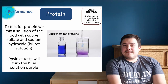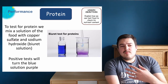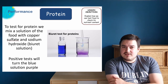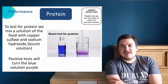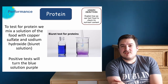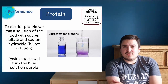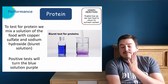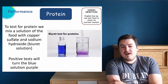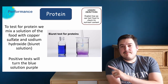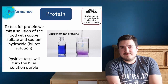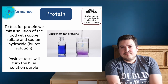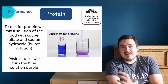If we're testing food for proteins, we use Biuret solution, which contains copper sulfate and sodium hydroxide. We mix this with the food dissolved in water, and the Biuret solution will change from a blue color to a purple color, as you can see in the beaker in the image. A negative result will keep the Biuret solution remaining blue.